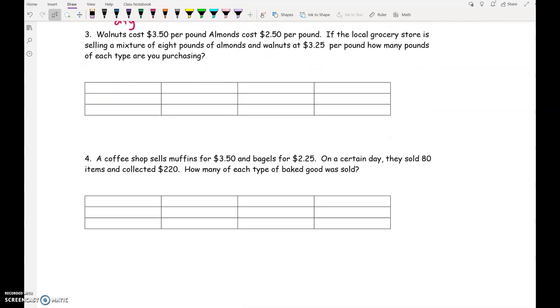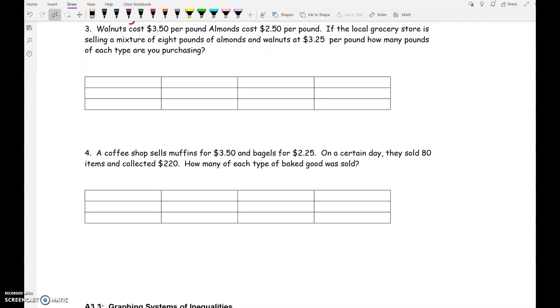Number 3 is a little bit different, and I want to make sure we go through it. And I'm basically going to lead you through every part of this because there's two things that are a little bit weird. Okay, first of all, walnuts cost $3.50 per pound. Almonds cost $2.50 per pound. If the local grocery store is selling a mixture of 8 pounds of almonds and walnuts at $3.25 per pound, how many pounds of each type are you purchasing? So first we're going to talk about money, and the first thing they talk about is walnuts. Actually, I'm just going to use W for walnuts and A for almonds.